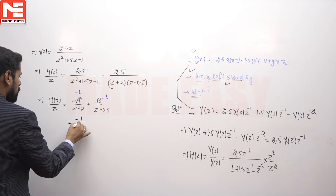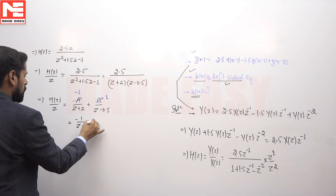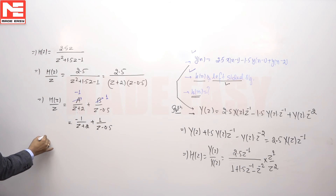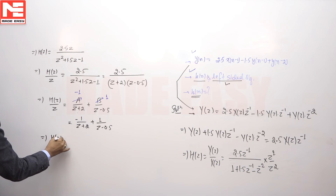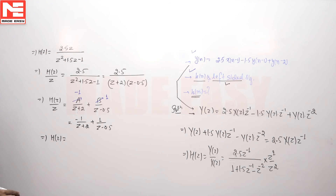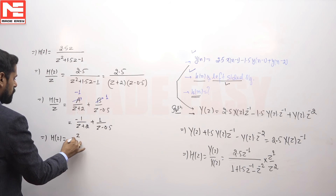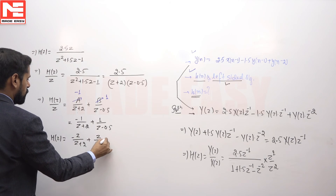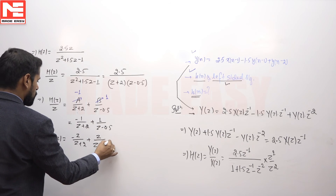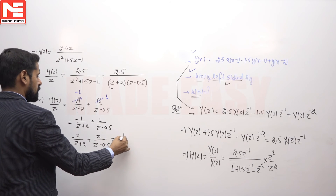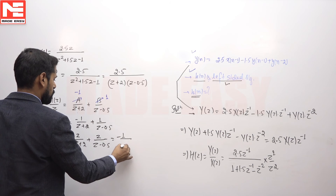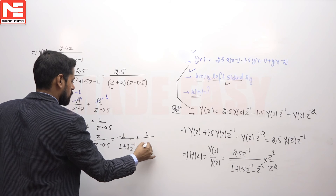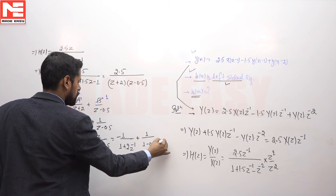So the first term is −1/(z + 2) and the second term is 1/(z − 0.5). Multiplying both sides by z gives H(z) = −z/(z + 2) + z/(z − 0.5), which can be written as −1/(1 + 2z⁻¹) + 1/(1 − 0.5z⁻¹).